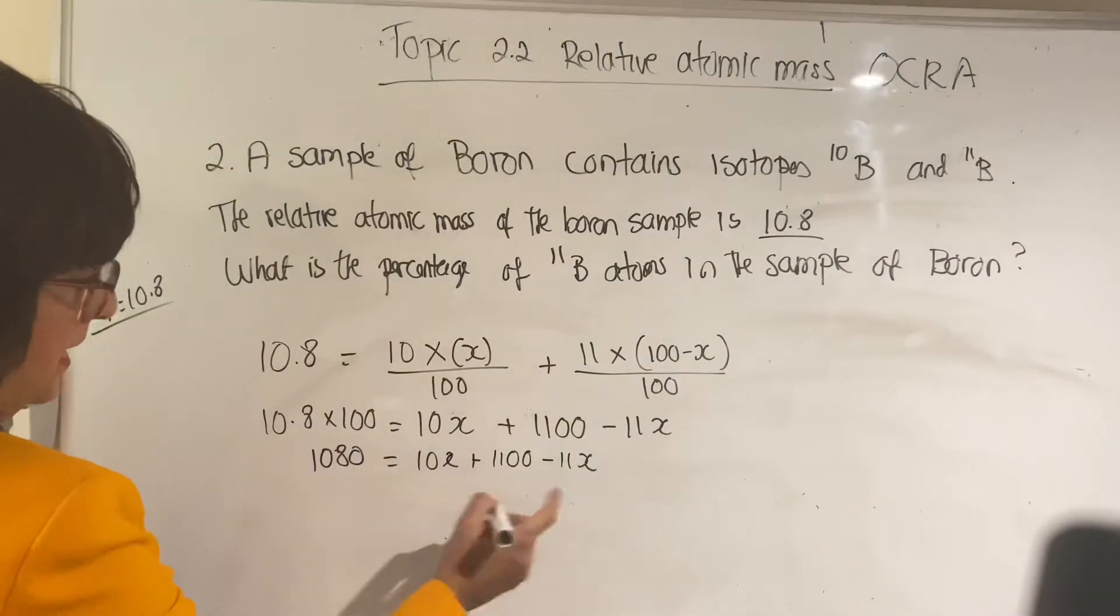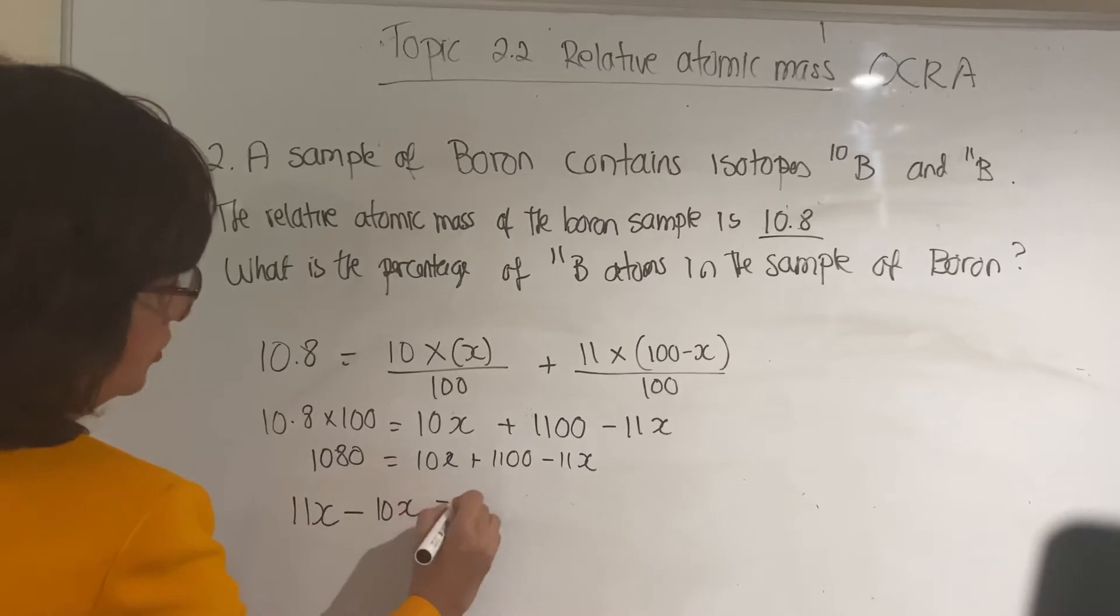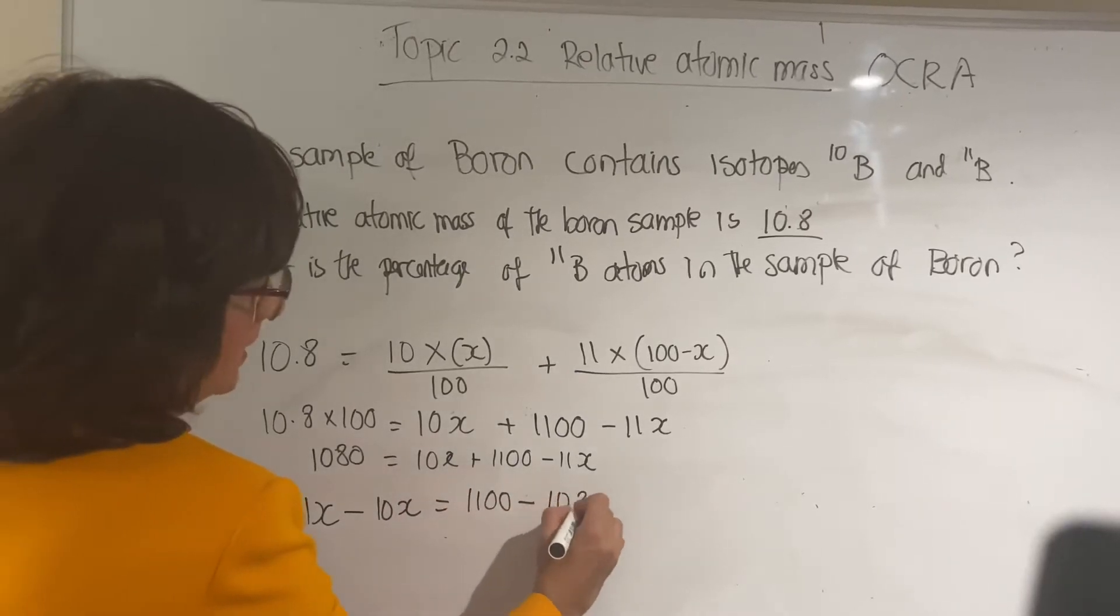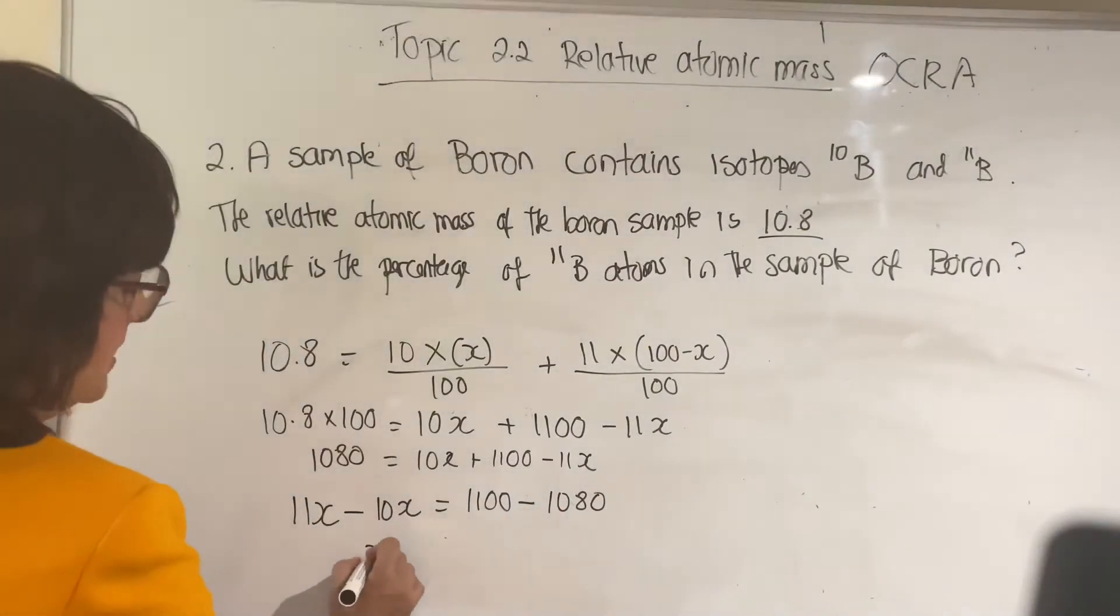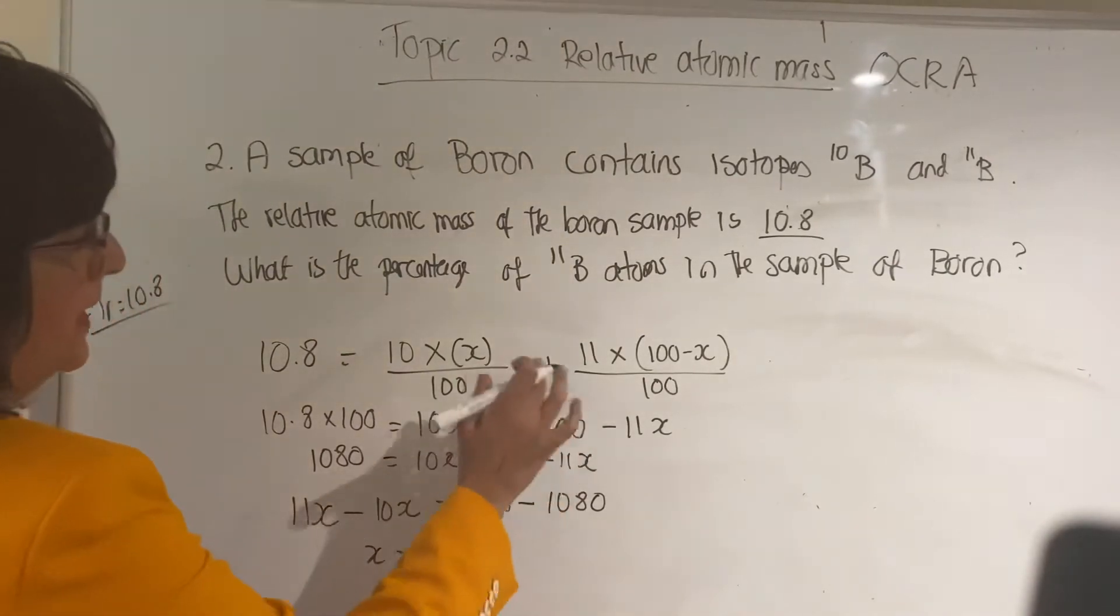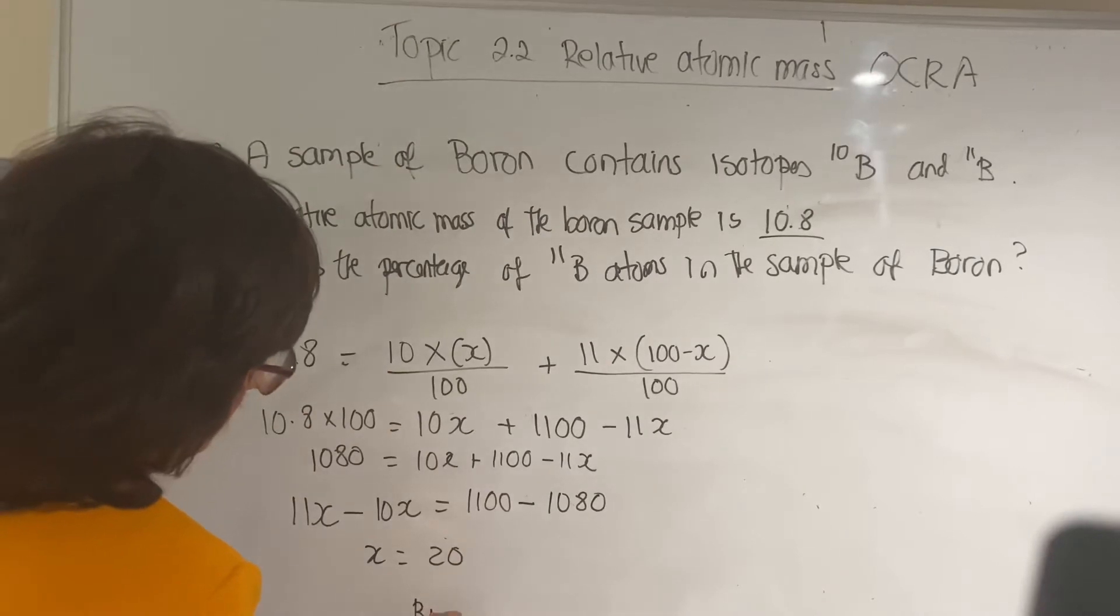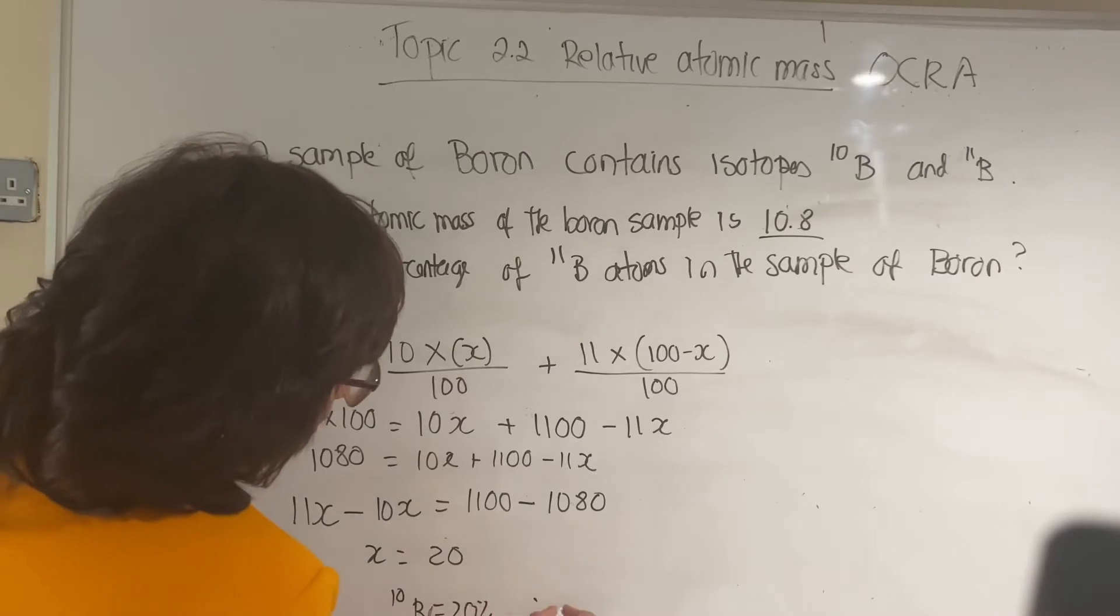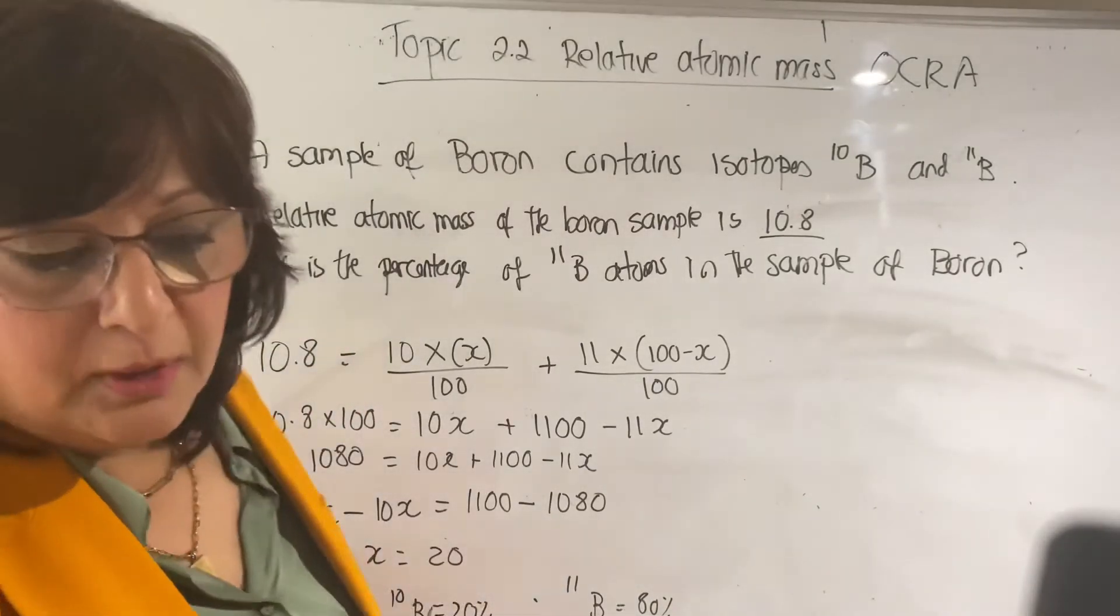So that makes x equals to 20. So x is for isotope 10, so boron-10 is 20%. Therefore boron-11 is 80%, and that's how you solve these questions.